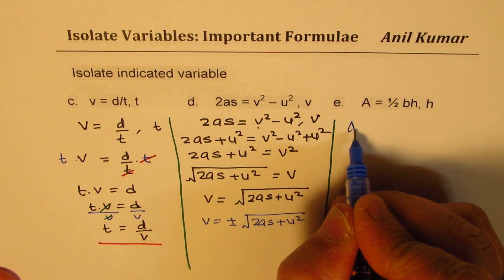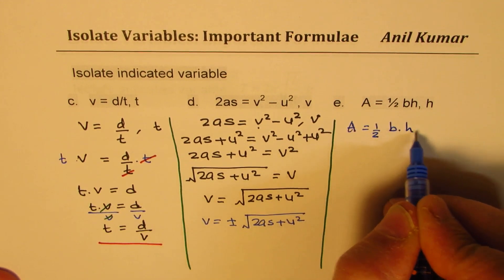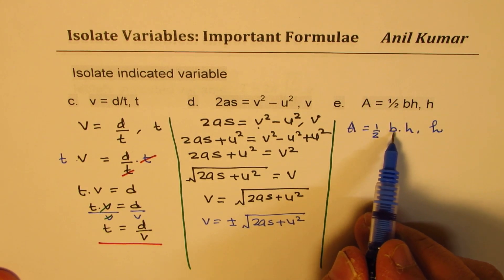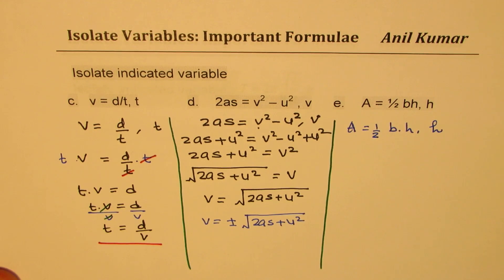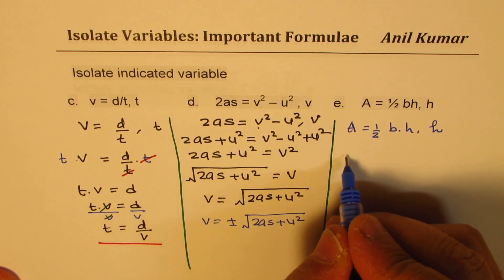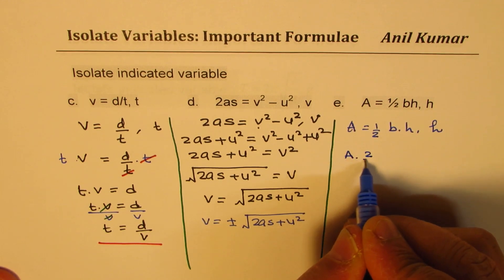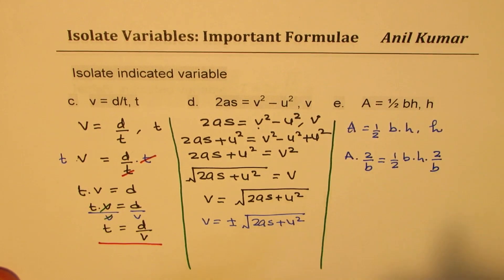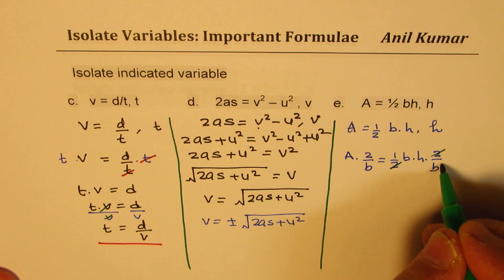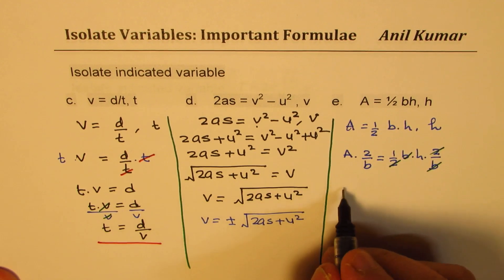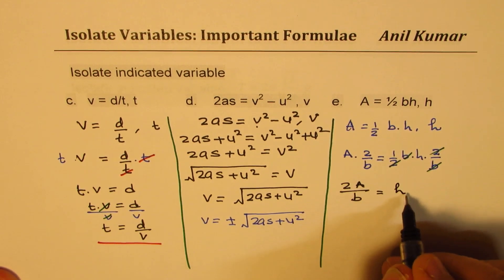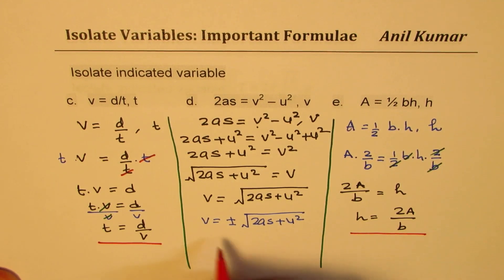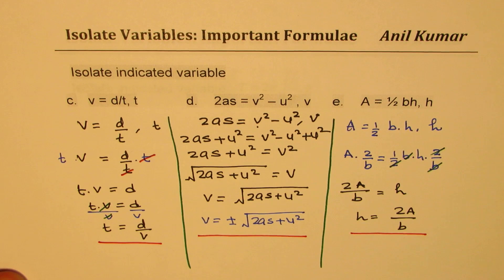Next: area equals to half of base times height, and we want to know what height is. We do not want 2 in the denominator and b in the numerator. So we multiply by the reciprocal: area times 2 over b. 2 and 2 cancel and b and b cancel, leaving us with 2A over b equals to height, or height equals to 2A over b.